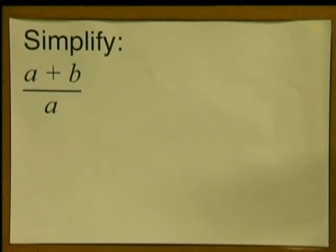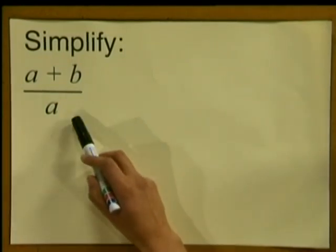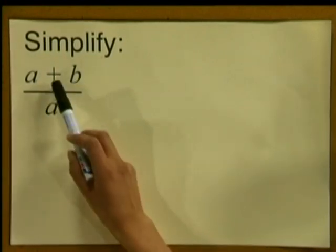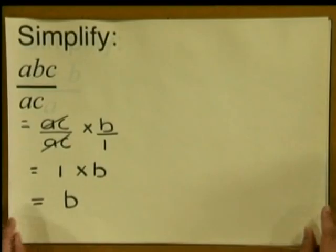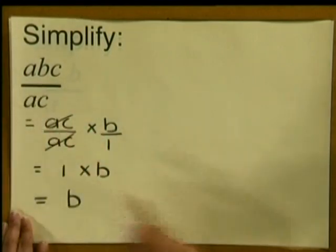Are you ready for number 2? Simplify A plus B divided by A. Now be careful here. The answer is A plus B divided by A — this cannot be simplified. Why? We do not have factors to cancel. A and B are terms, not factors. In an expression, terms are separated by a plus or a minus sign. In our previous example we could cancel because we had factors with no plus or minus signs between them.